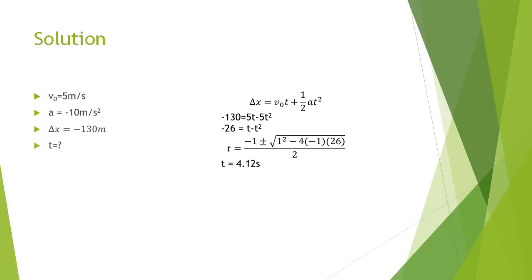You would see that one formula can be used in this situation which is delta x equals v0 t plus half a t squared. So when we substitute everything in there we would see minus 130 equals five times t minus five times t squared, or negative 26 equals t minus t squared. So if we switch to a binomial equation you would know that it's t squared minus t minus 26 equals zero.